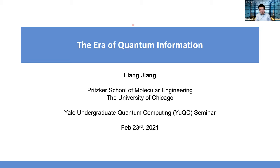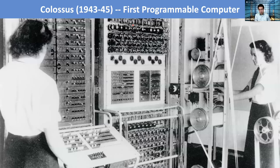It's probably good to look into what happened in history. This here is actually one of the first programmable computers — you'll see a lot of knobs — and it's actually a classical computer based on mechanical devices. You can make changes with switches so that you can program the computer.